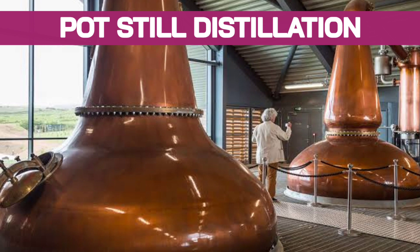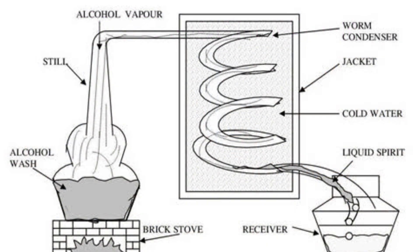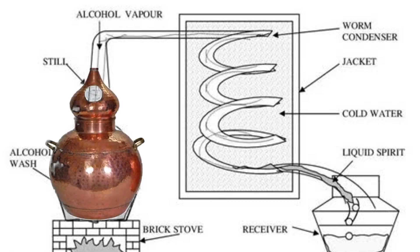The pot still is shaped like a giant onion and consists of two parts: a still and a worm condenser. The still is made of copper, which is a good conductor of heat and has good resistance to the effect of acids.